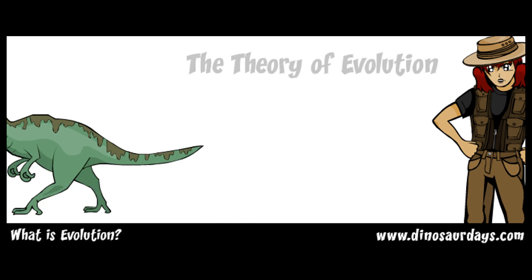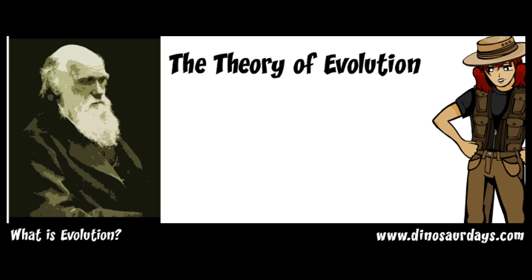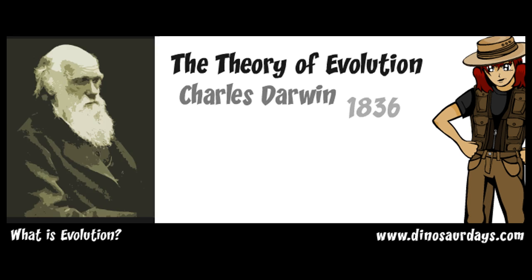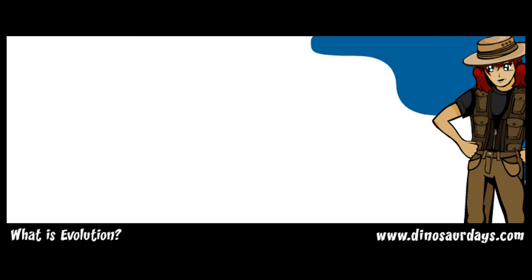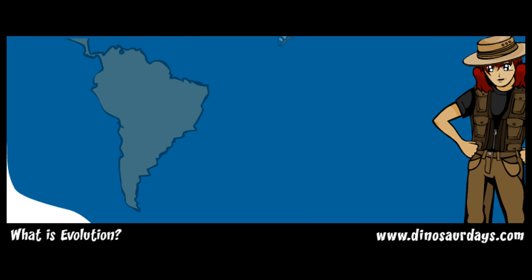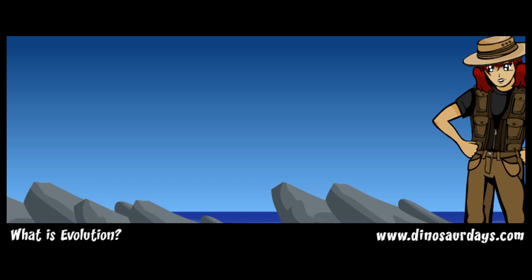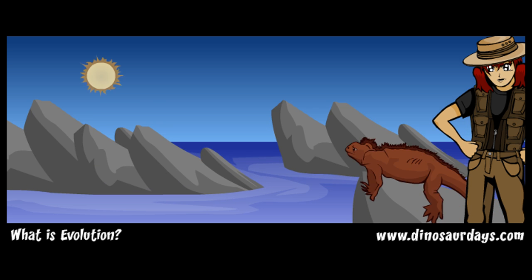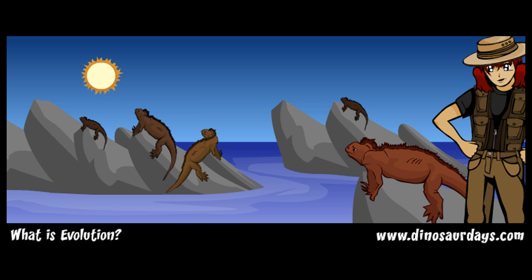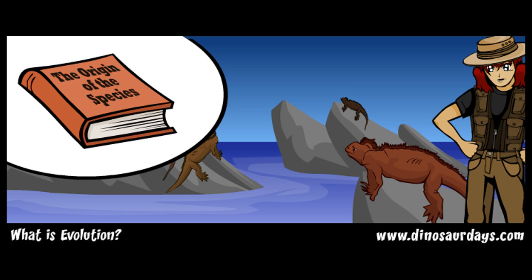The theory of evolution was invented by Charles Darwin in 1836. Darwin studied animals his entire life and traveled all over the world to look at different species. He noticed how a species might change in different environments. He wrote a book called The Origin of the Species.